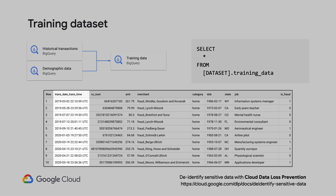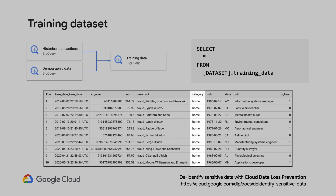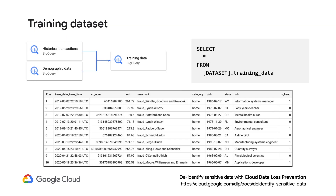Each column is a feature such as what time the transaction occurred, what the merchant was, category, and so on. There's also a label feature called is_fraud, which is a value of 1 or 0. This is what the model will then try to predict — a probability of fraud between 0 and 1. The data here is simulated data, so you can replace this with your own real data for your needs.